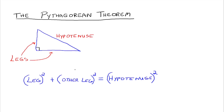Here we're just going to talk about how to use it. Remember, it's leg squared plus other leg squared is equal to hypotenuse squared. I use this terminology because your triangles aren't always going to look like this — they can look in any different orientation whatsoever. But you have to have a 90 degree angle, and the two sides that make up that 90 degree angle are called legs, and the side opposite the 90 degree angle is called the hypotenuse. That's just important information to know in general.